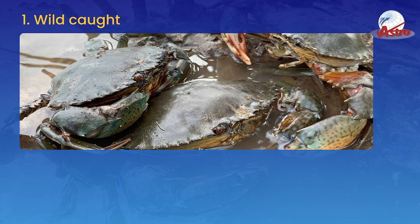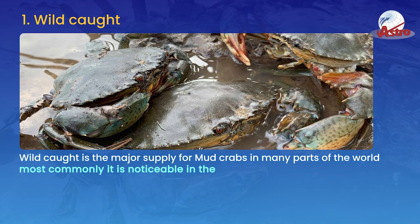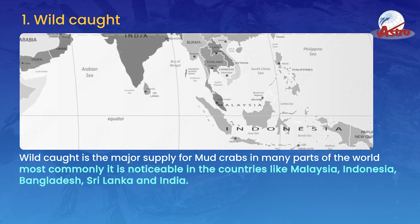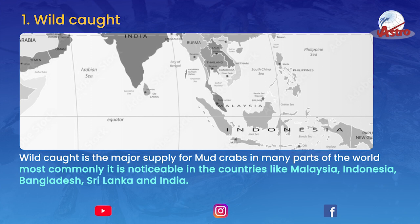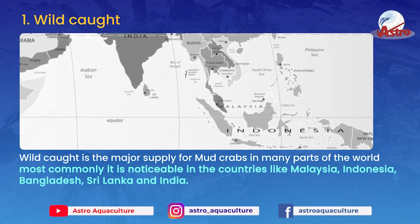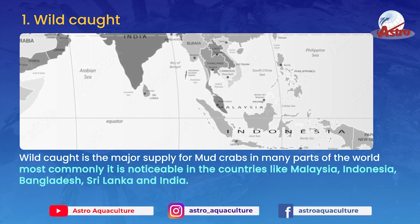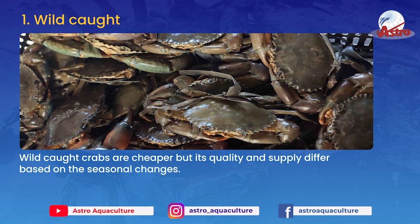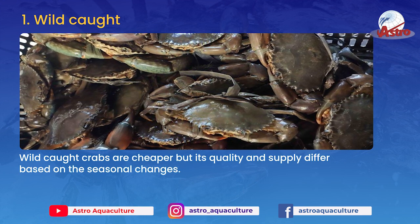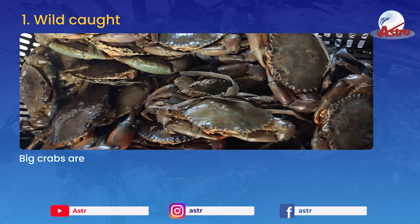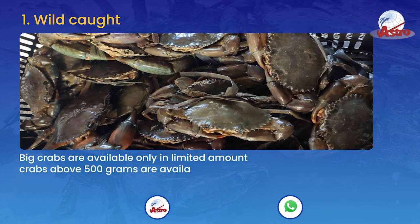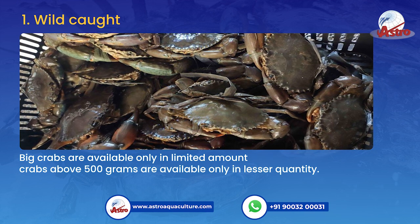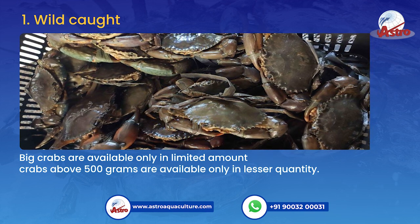Wild Caught is the major supply for mud crabs in many parts of the world. It is most commonly found in countries like Malaysia, Indonesia, Bangladesh, Sri Lanka, and India. Wild caught crabs are cheaper, but their quality and supply differ based on seasonal changes.